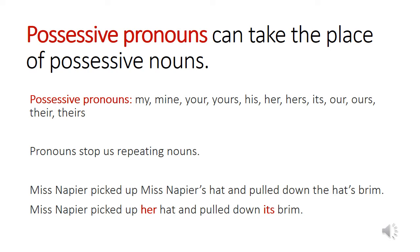My, mine, your, yours, and so on. In these sentences, can you see how the possessive nouns have been replaced with possessive pronouns? Miss Napier picked up Miss Napier's hat and pulled down the hat's brim. The second sentence has changed: Miss Napier picked up her hat and pulled down its brim. Can you see how the possessive nouns, Miss Napier's and hat's, have been replaced by possessive pronouns, her and its?